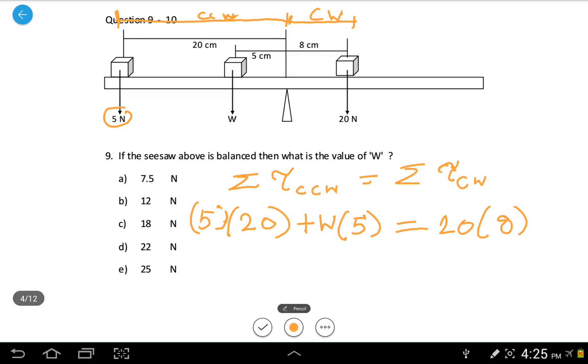We can simplify this. Now, we are going to get 5W equals, now that is 160, that is 100, subtract them, you are getting 60. Divided by 5, you are getting W equals 12N. So the answer for this question is B.